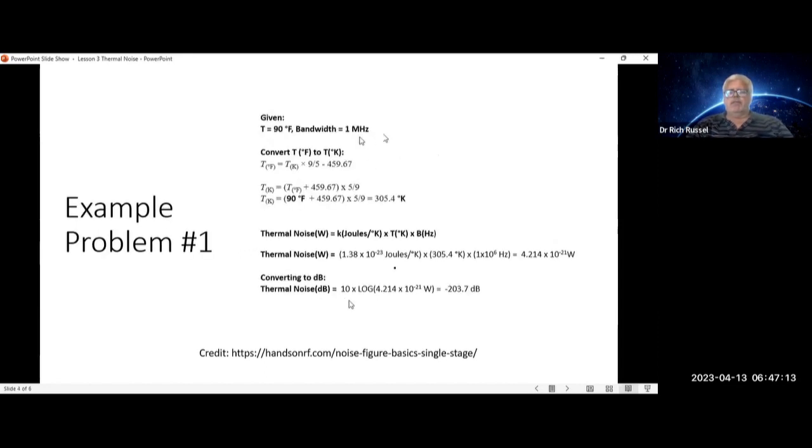Let's do an example. If the temperature is 90 degrees Fahrenheit and your bandwidth is 1 megahertz, what is the thermal noise? Well, we know the equation for temperature. We need to convert that to Kelvin. So degrees Kelvin is equal to quantity of temperature in Fahrenheit plus 459.67, all times 5 ninths. So 90 degrees Fahrenheit is equal to 305.4 degrees Kelvin.